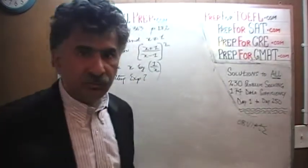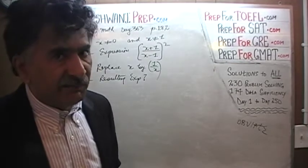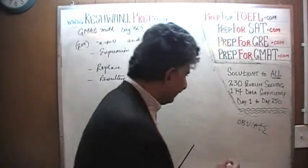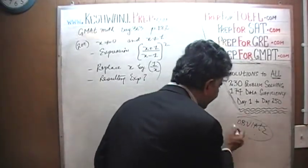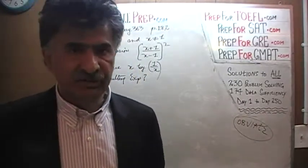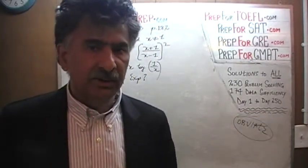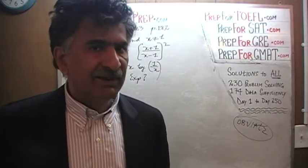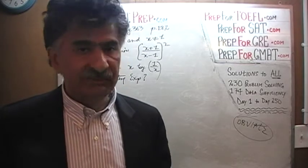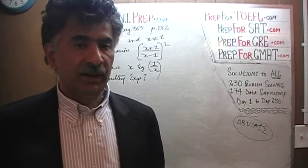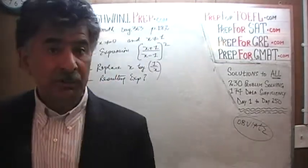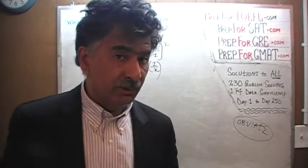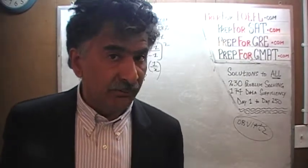Another way is to obviate all this algebraic work — make it unnecessary, make it redundant, make it unrequired — by simply replacing the x with some number. And that is called the plugging-in method. Which method should we do first? Let's do the quick and dirty method, which is the plug-in method.